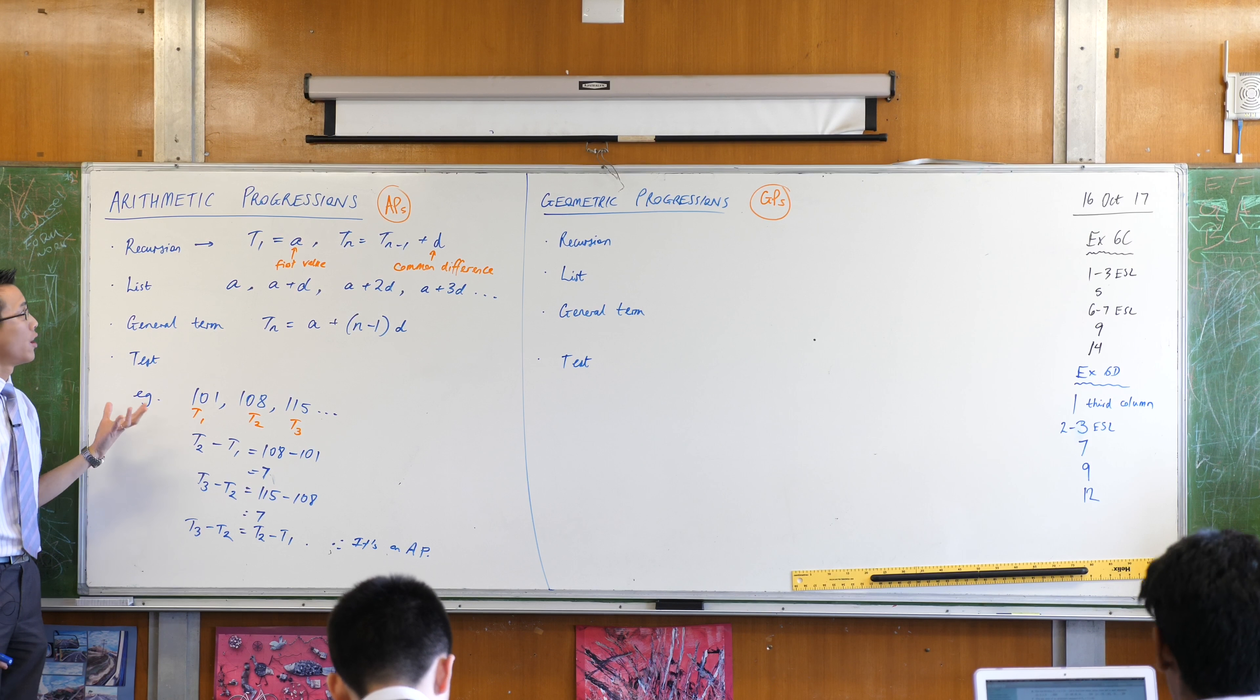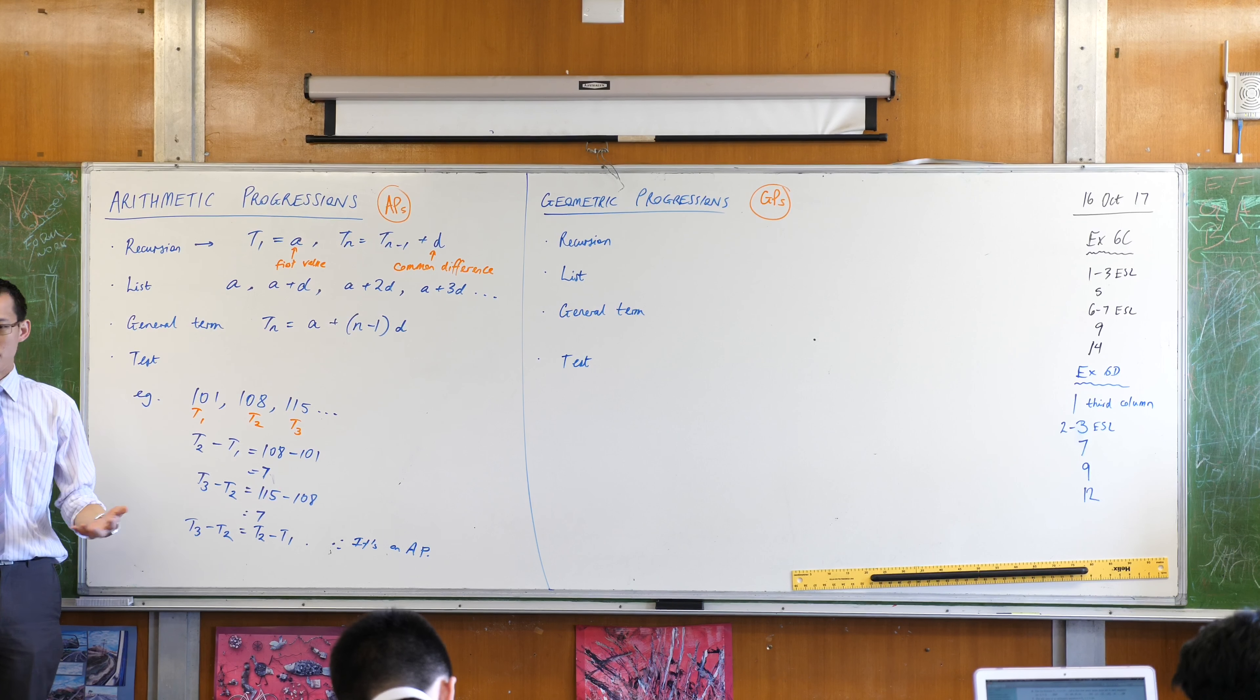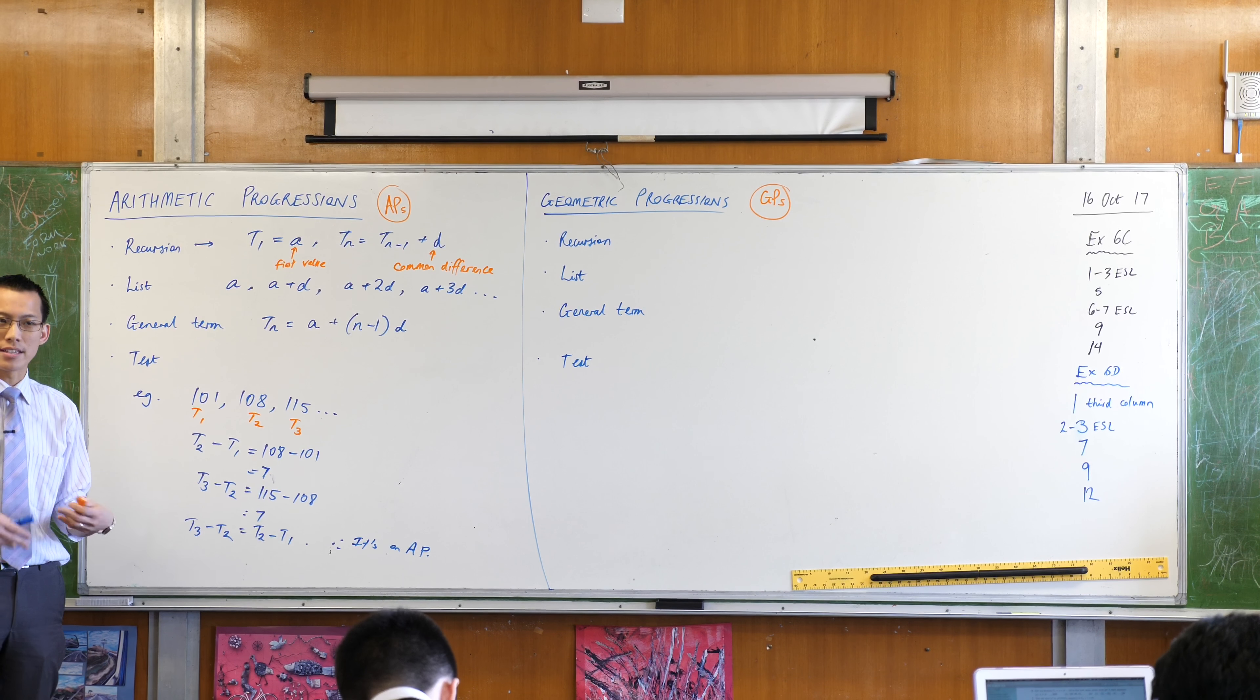Now in just the same way we're going to use our three lenses for defining a progression in the same order just like we did with APs. Except for geometric progressions, what makes the geometric progression special?